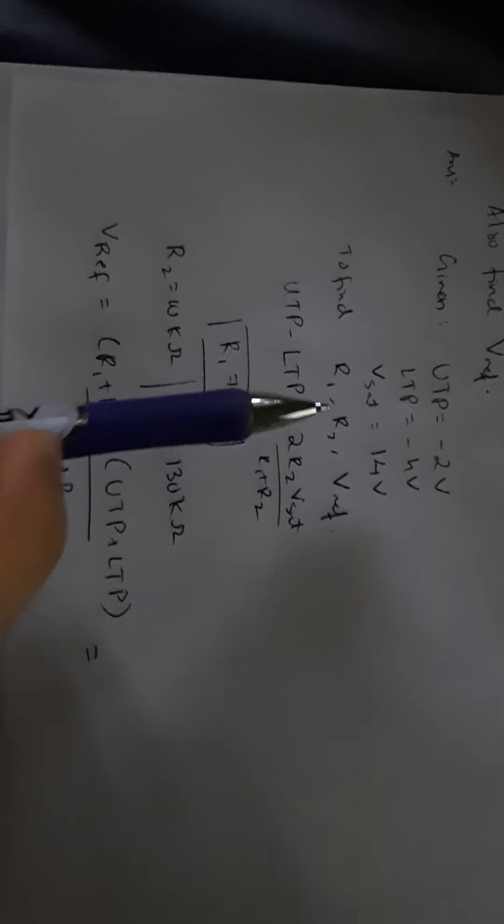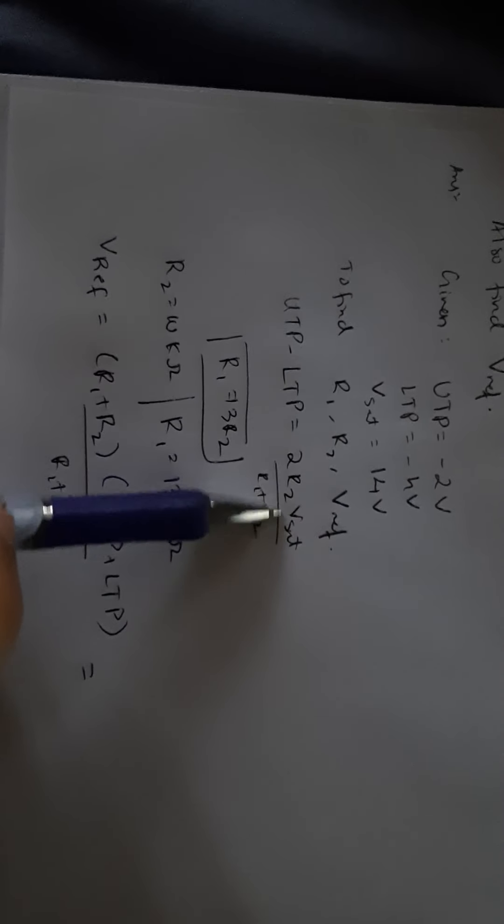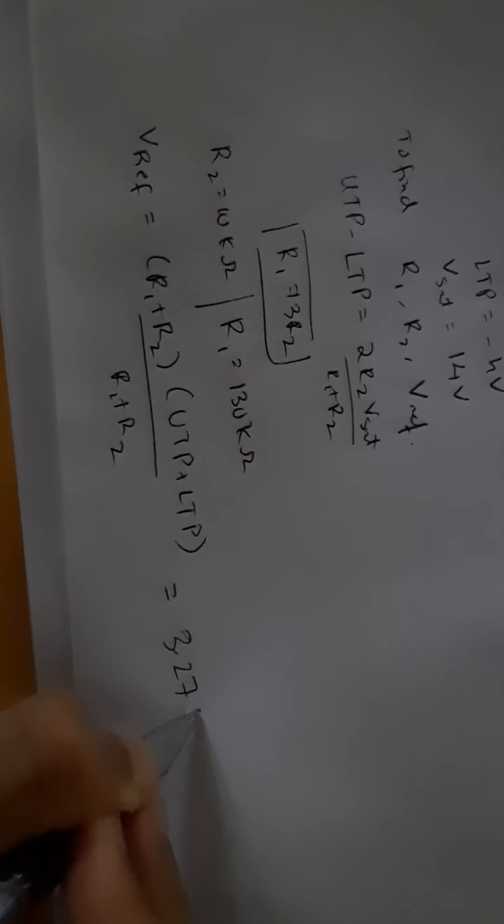This next question also asks to design a Schmitt trigger and find V_reference — a new quantity. R1 and R2 are found the same way as before. After applying V_sat, UTP, and LTP values we find R1 and R2, take R2 = 10 kΩ, and then applying all values to the V_reference formula we get V_reference = 3.27 volts. At the end we draw the Schmitt trigger circuit diagram.